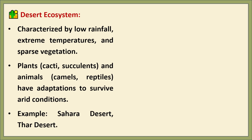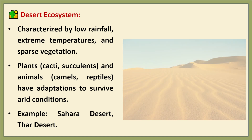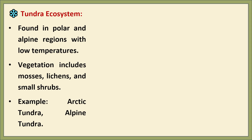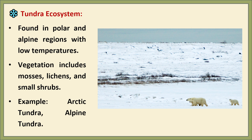Desert ecosystems are characterized by low rainfall, extreme temperatures, and sparse vegetation. Organisms here have special adaptations to survive harsh conditions — plants like cactus store water, while animals such as camels and reptiles have evolved to withstand heat and limited water supply. Famous deserts include the Sahara in Africa and the Thar in India. Tundra ecosystems are found in polar and alpine regions where temperatures are extremely low and the ground remains frozen. Only hardy vegetation like mosses, lichens, or small shrubs can survive here. Well-known tundras include the Arctic tundra and alpine tundras in high mountainous regions.